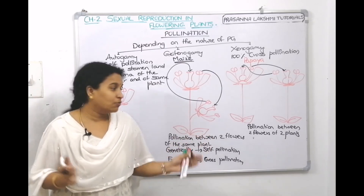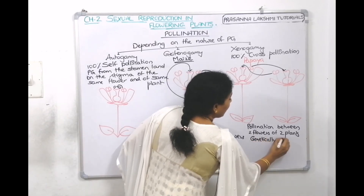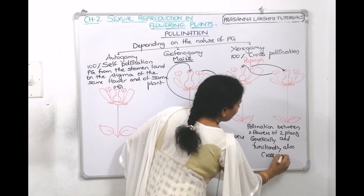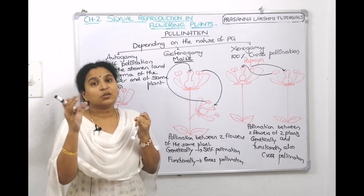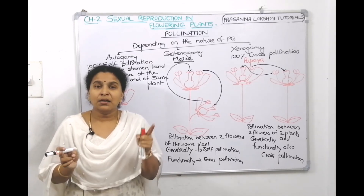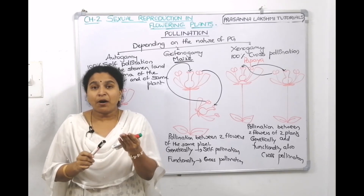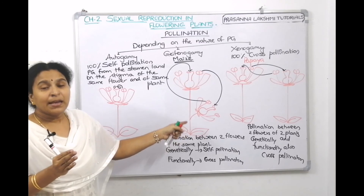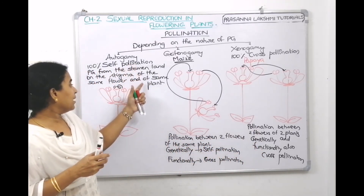Xenogamy is genetically and functionally cross-pollination. For xenogamy, agents are required to carry the pollen grain from one plant to another. These are the agents of pollination. The pollen grain is non-motile, so it requires the help of an agent. Pollination by wind is called anemophily; pollination by water is called hydrophily. These two come under abiotic agents.